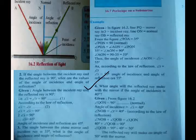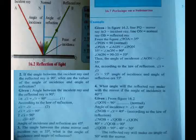What angle will the reflected ray make with the mirror if the angle of incidence is 40 degrees? Refer to figure 16.2 on textbook page 111. From figure 16.2, angle QON equals 90 degrees, since ON is the normal. The angle of incidence, angle I, is given as 40 degrees. Angle NOB is the angle of reflection, which equals 40 degrees by the law of reflection.